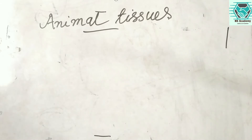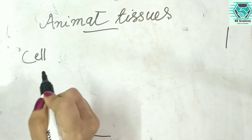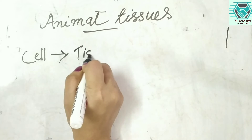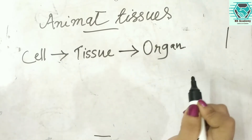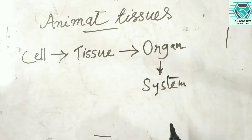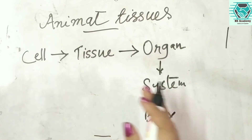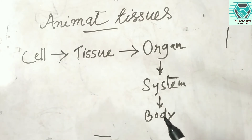Hello students, welcome to Academia. Today we discuss about animal tissues. As we know, the cell is the basic structural unit — cells make tissues, tissues make organs, organs make systems, and systems make our body. This is the brief elaboration of how cells form tissues, tissues form organs, organs form systems, and the system forms our body.